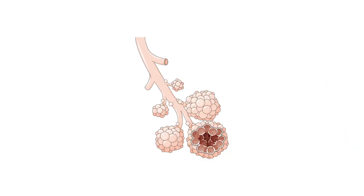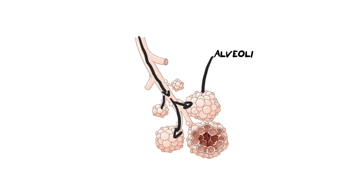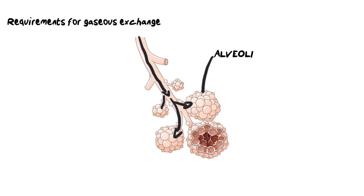Zooming in even closer, we can see the very end of the bronchioles. Air moves down a bronchiole and branches off into each alveolus — the alveoli are the site of gaseous exchange. It's important to understand why the alveoli are structured the way they are, and what the requirements are for gaseous exchange to happen inside them.